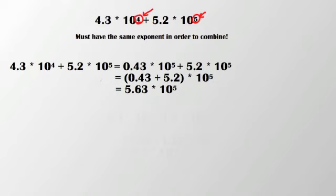So what I'm going to do is take this 10 to the 4th and change it to 10 to the 5th. Because I did that, I have to change my 4.3 to 0.43.